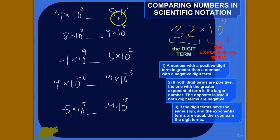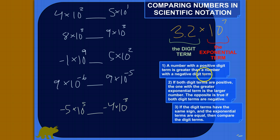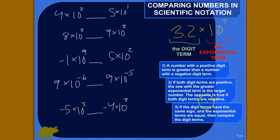If they're both positive or both negative, move on to rule number two. If both digit terms are positive, then the one with the greater exponential term is the larger number. The opposite is true if both digit terms are negative — the one with the least exponential term is actually the larger number. Rule three: if both digit terms have the same sign and the exponential terms are equal, then compare the digit terms — the one with the larger digit term is the larger number.